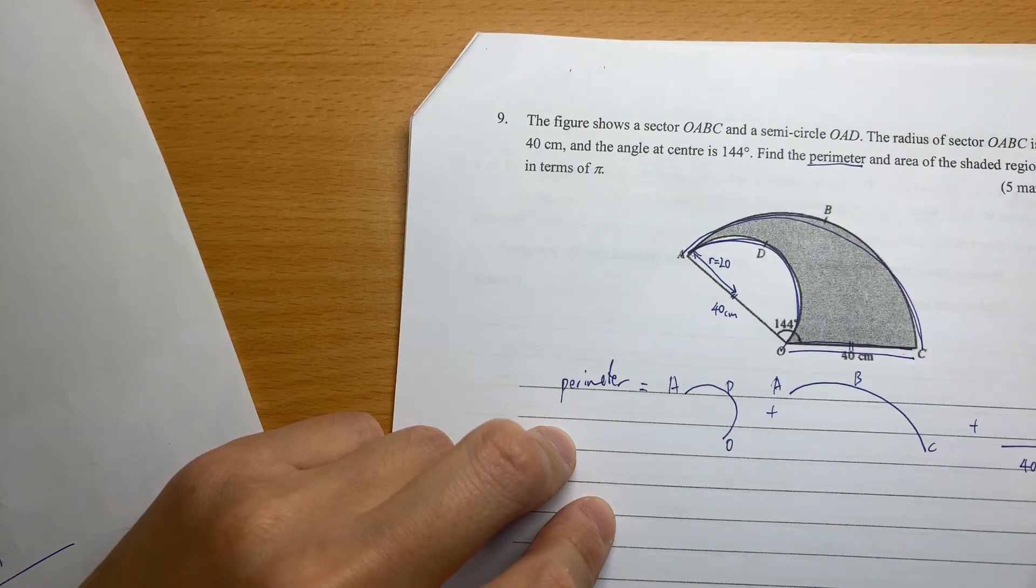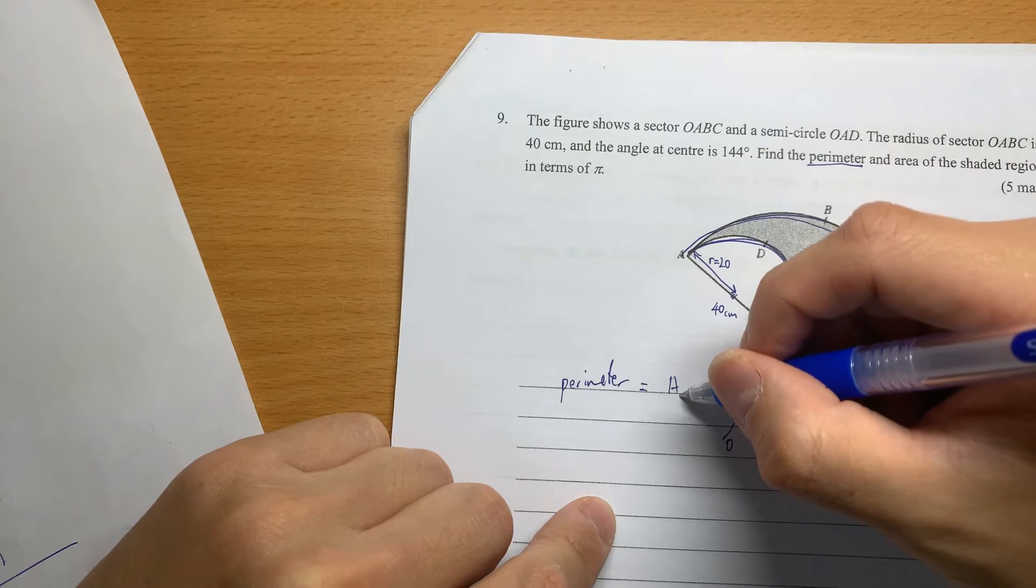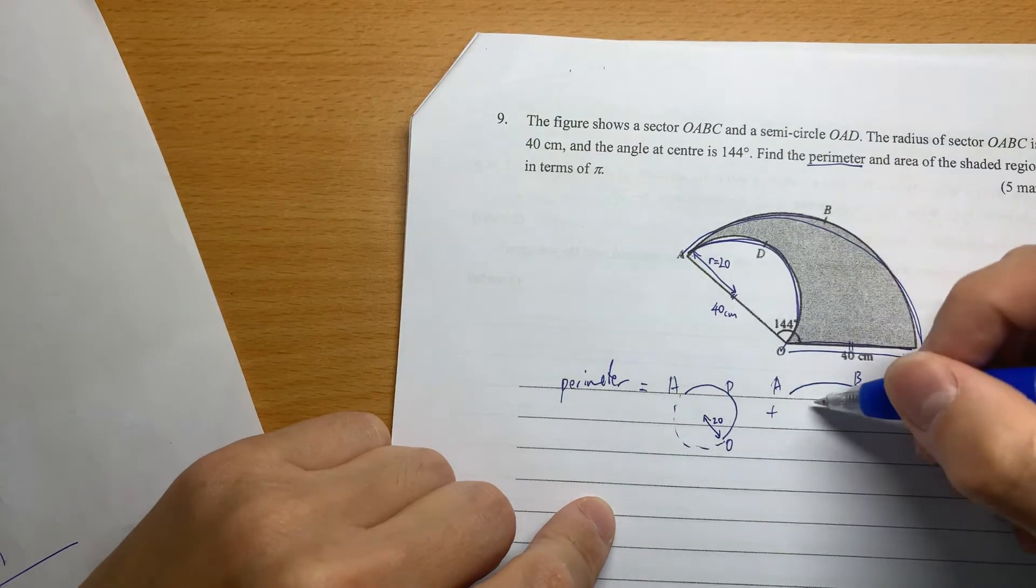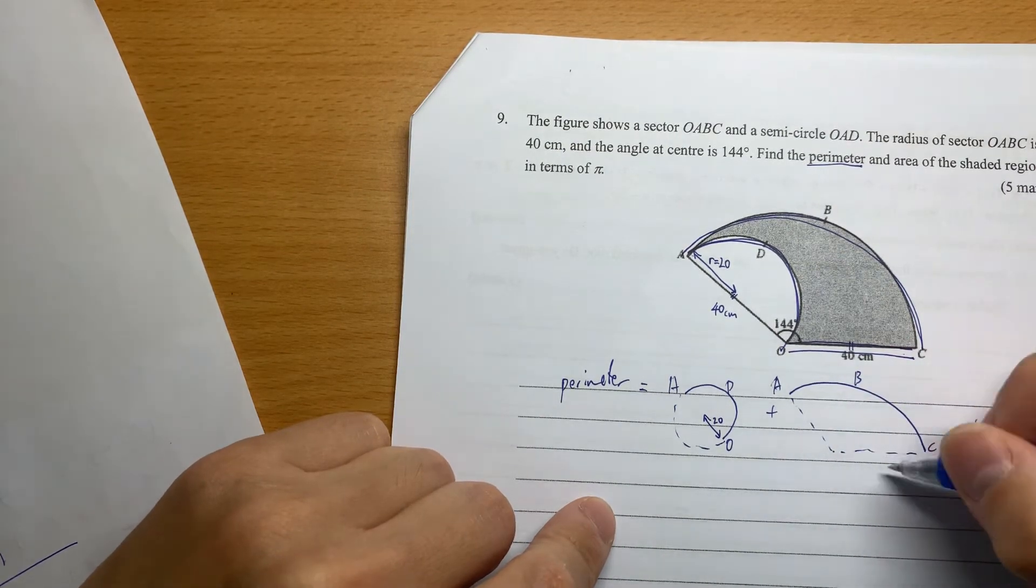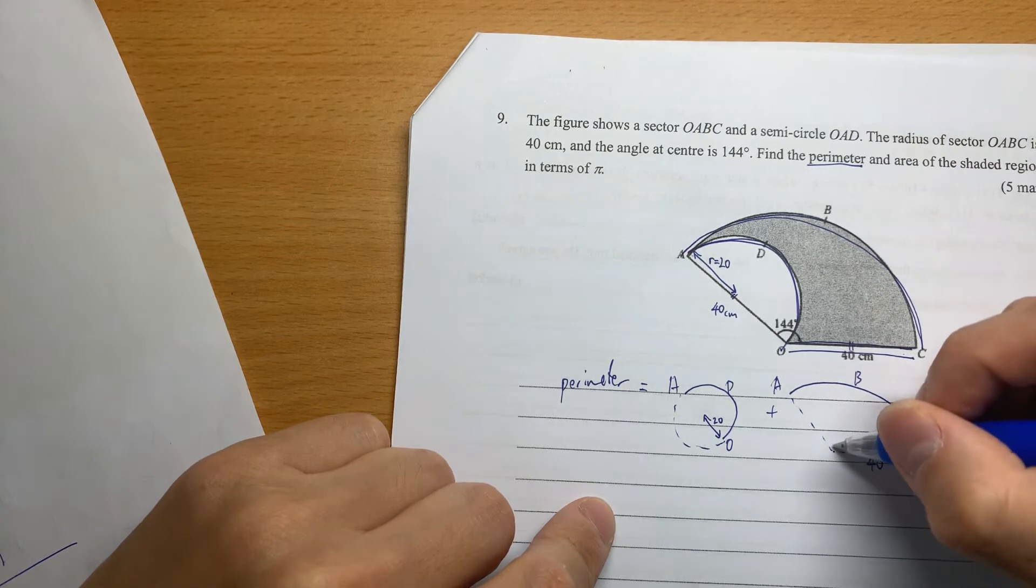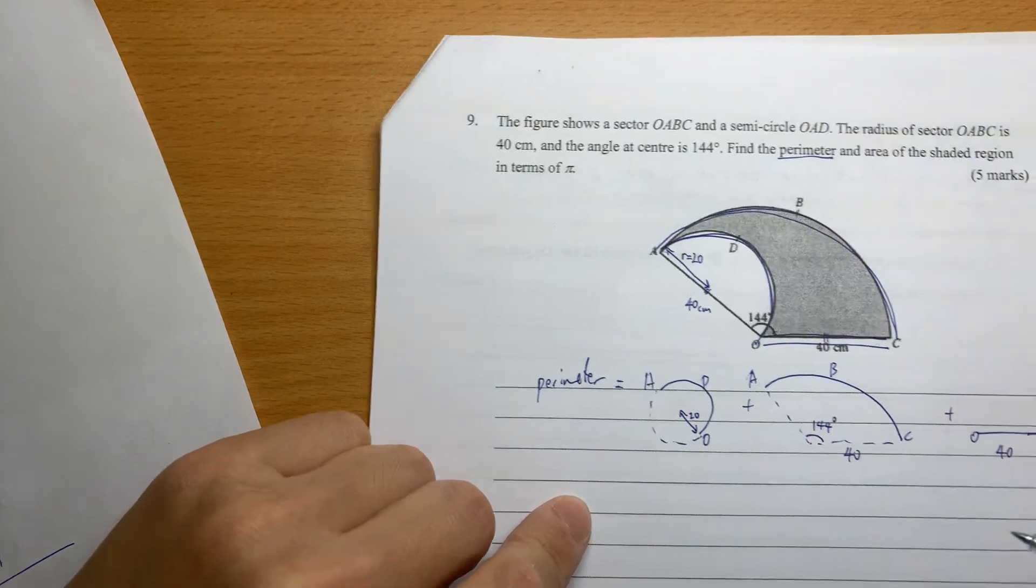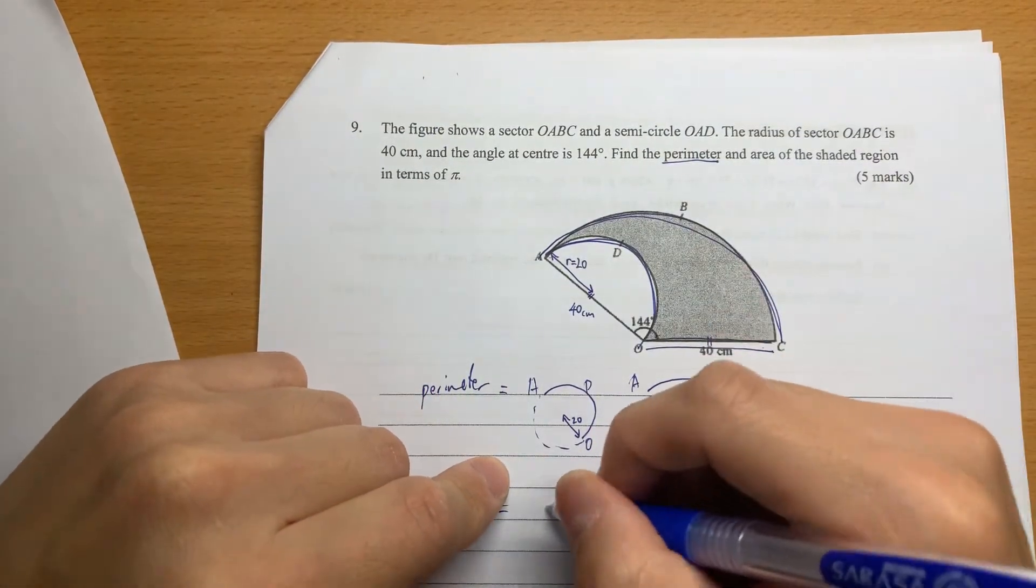The first line, the second line, the third line. The third one is straightforward - it's just simply 40. And then the first one, this is a semicircle with radius 20. This is a sector with radius 40 and the angle 144 degrees.